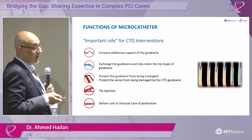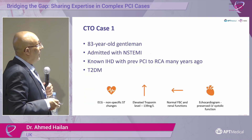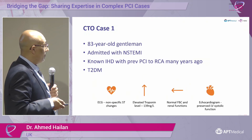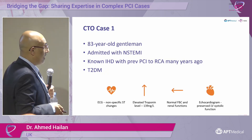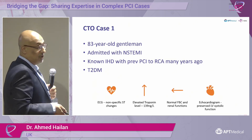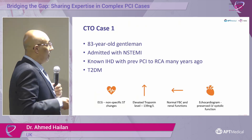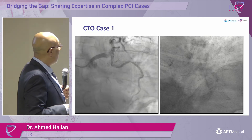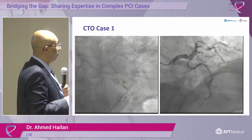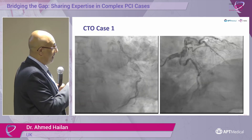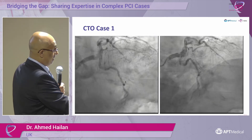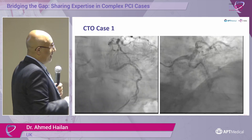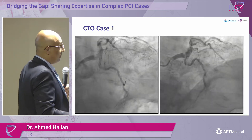I'll give you an example of a case where I used two microcatheters. This is an 83-year-old gentleman admitted with NSTEMI, ischemic heart disease, previous PCI to the RCA many years ago, and type 2 diabetes. ECG showed non-specific changes but troponin was raised, with normal FBC, renal function, and good LV function. Angiogram showed a lump of calcium at the terminal left main stem, heavily calcified tortuous LAD, flow in the LAD not TIMI 3, and a subtotally occluded distal LAD with some collaterals.